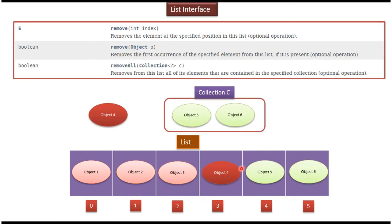Suppose I want to remove Object 4 from the list. I can do this in two ways. The first way is to call the remove() method by passing the index — in this case I pass index 3, and Object 4 will be removed. Another way is to pass Object 4 directly to the remove() method which accepts an object, and it will remove Object 4 from the list.